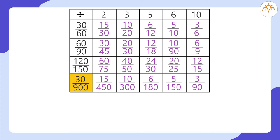30 divided by 900, dividing by 2, gives 15 divided by 450. 30 divided by 900, dividing by 3, gives 10 divided by 300.